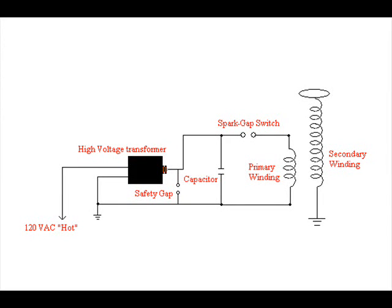The complex forces at work in a Tesla coil aren't completely understood, but the secret to the incredible voltage and frequency boost is due to resonance. And the trick is to balance inductive reactance and capacitive reactance. Essentially, what happens is the high voltage transformer charges the capacitor until enough voltage is built up to jump across the spark gap. This fires a pulse of oscillating energy into the primary winding, which in turn induces a voltage spike into the secondary winding. It's sort of like a normal transformer, where energy is transferred between two windings with a magnetic field, but again, the voltage boost is due to resonance.